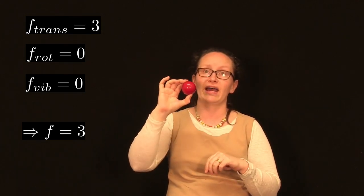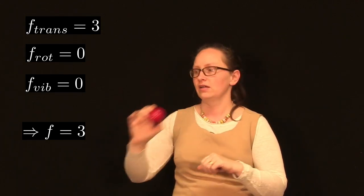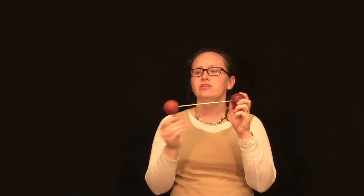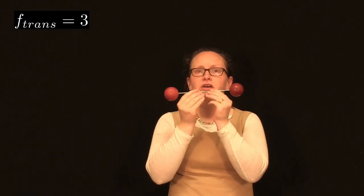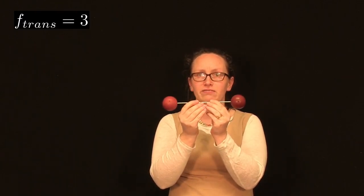So this monatomic particle just has three degrees of freedom associated with translational movement: it can move in the x, y, and z directions. Now let's consider a diatomic particle. H₂ is a common example, as are N₂ and O₂ — two atoms connected by one bond. This particle can also move in three directions: backwards and forwards, up and down, and in and out. So it has three translational degrees of freedom.